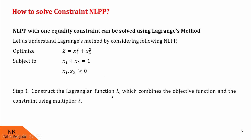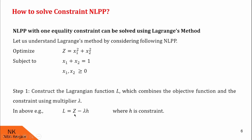In step 1, we construct the Lagrangian function denoted by L, which combines the objective function and the constraint using multiplier lambda. So we define L as z minus lambda times h, where z is the given objective function and h is the given constraint. Substituting for z and h, we get L = x1² + x2² − λ(x1 + x2 − 1). We label it as equation number 1.